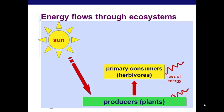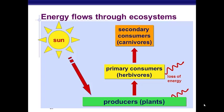At each level, you'll notice that this squiggly red line is indicating a loss of energy. That is because every time energy moves up a food web, there is a lot that is lost — we'll talk about that in just a second. Next, the secondary consumers, or carnivores, eat the primary consumers, the herbivores, and get energy from them. So the energy flows from the producers up the food chain.